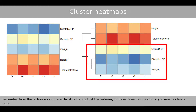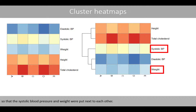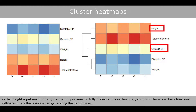Remember from the lecture about hierarchical clustering that the ordering of these three rows is arbitrary in most software tools. We could have switched the position of these two rows so that the systolic blood pressure and weight were put next to each other. Similarly, we could switch the order so that height is put next to the systolic blood pressure. To fully understand your heatmap, you must therefore check how your software orders the leaves when generating the dendrogram.